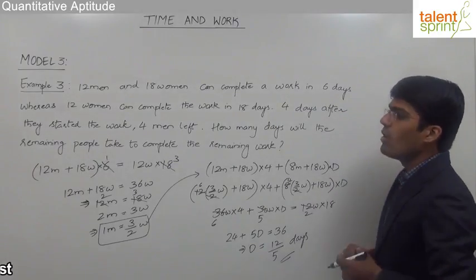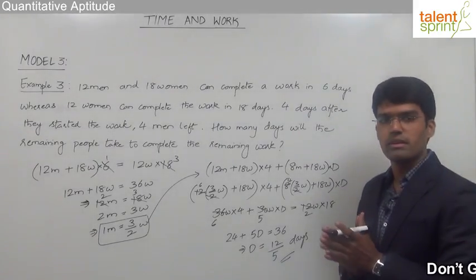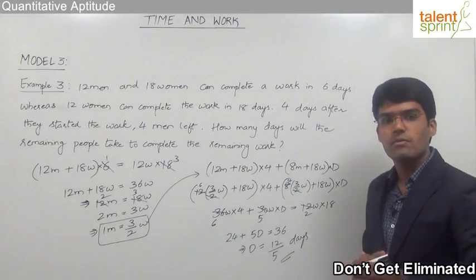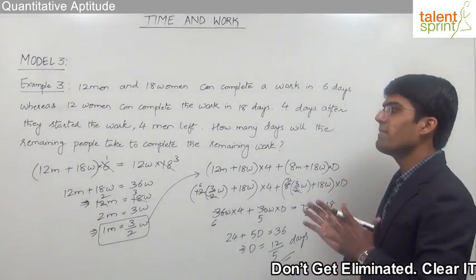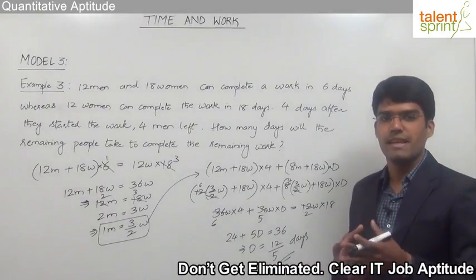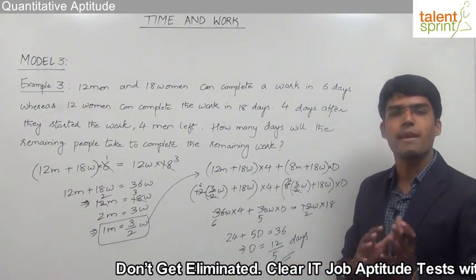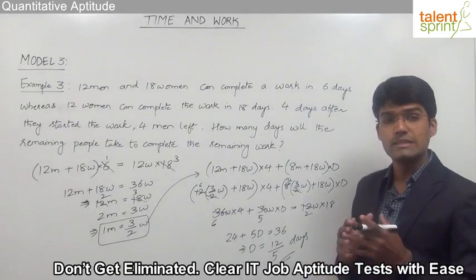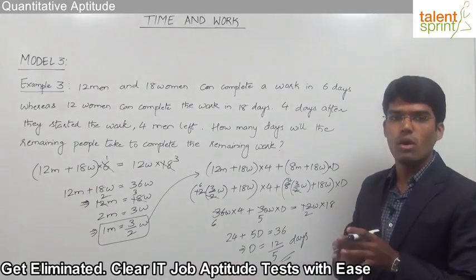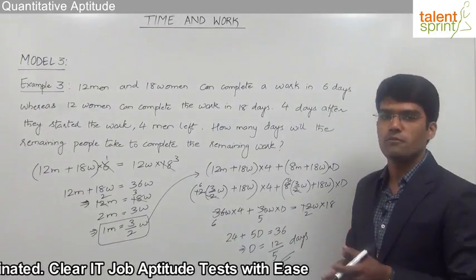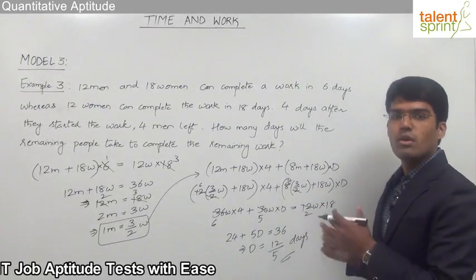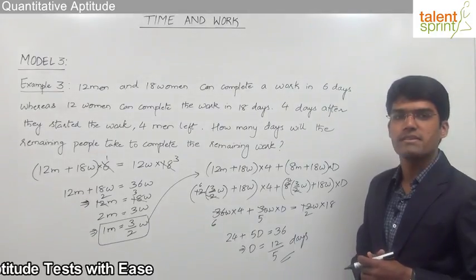Whenever we have a combination of different types of persons — men and women, or men, women and children — working together, it is always better to convert the complete work into terms of only one type: men, women, or children. Then balance the work on both sides to find the number of days required.